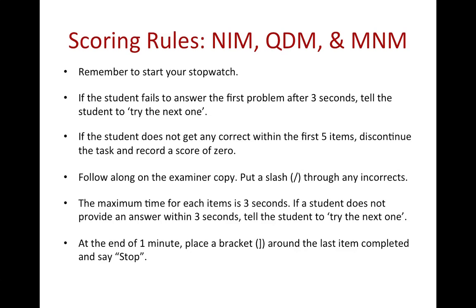Three of the AmesWeb 10 probes — the NIM, the QDM, and the MNM — follow the same guidelines for general administration and scoring. Remember to start your stopwatch each time. If the student fails to answer the first problem after three seconds, tell the student to try the next one. If the student does not get any correct within the first five items, please discontinue the task and record a score of zero. Follow along in the examiner copy and put a slash through any incorrects. The maximum time for each item is three seconds; if the student does not provide an answer within three seconds, tell the student to try the next one. At the end of one minute, place a bracket around the last item completed and say stop. Note that the oral counting measure has some differences, which we will describe in detail shortly.